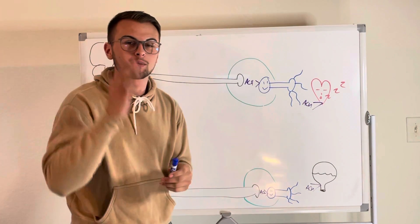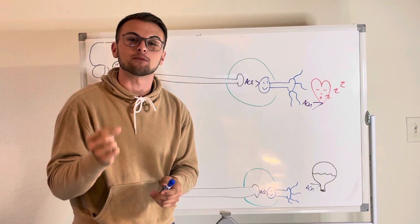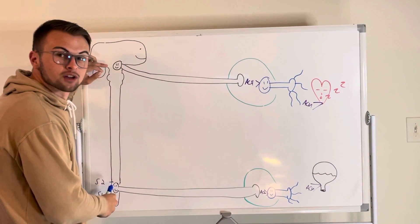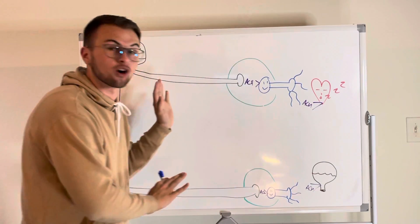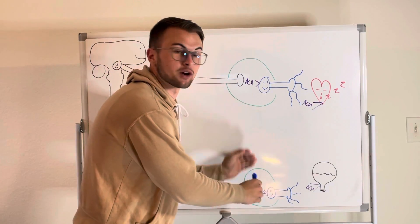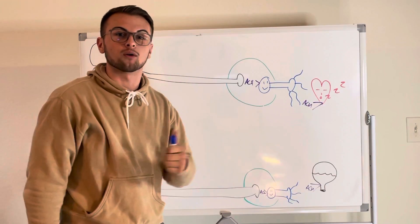So therefore we must know intuitively that the parasympathetic preganglionic neurons must have really long axons which extend all the way to the ganglia, which are right next to that affected tissue or organ.